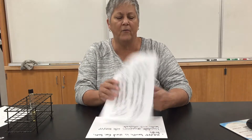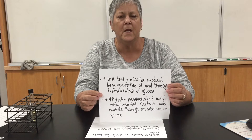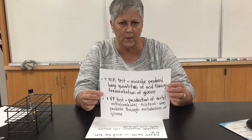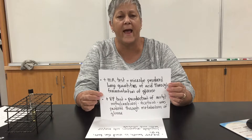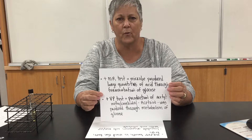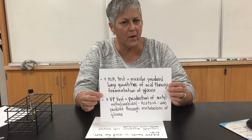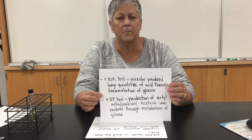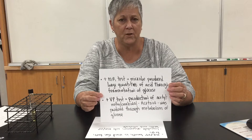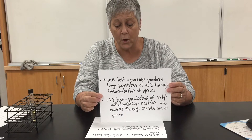If we have a positive reaction for the MR test, that means the microorganism, through various fermentative pathways, produces large quantities of acid. On the other hand, if we have a positive reaction for the Voges-Proskauer test or VP test, that means rather than large quantities of acid, the organism produced a neutral product called acetylmethylcarbinol, or we can just refer to it as acetoin.